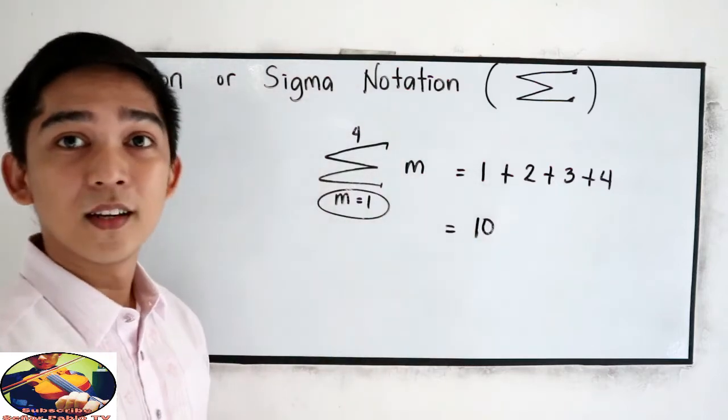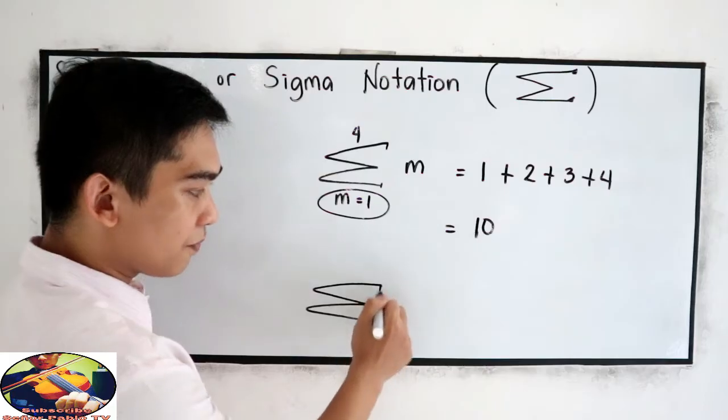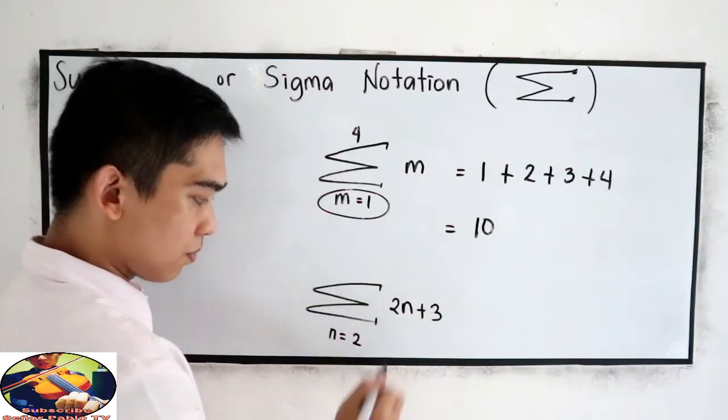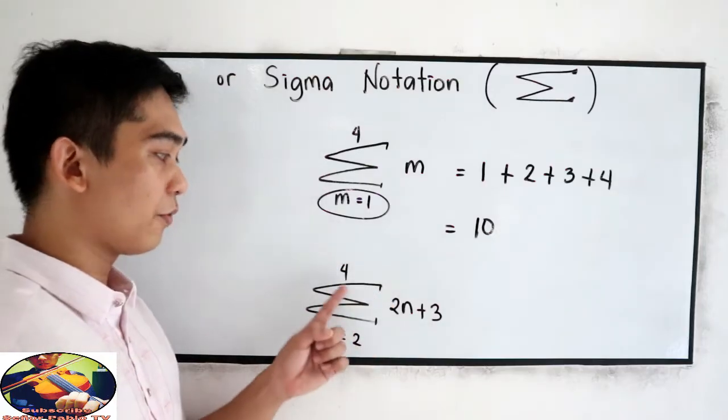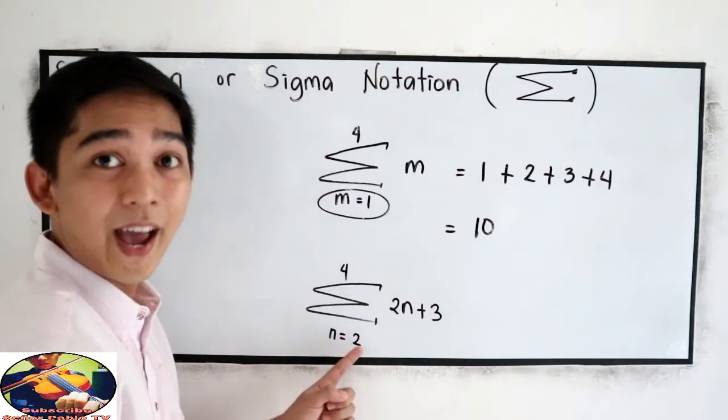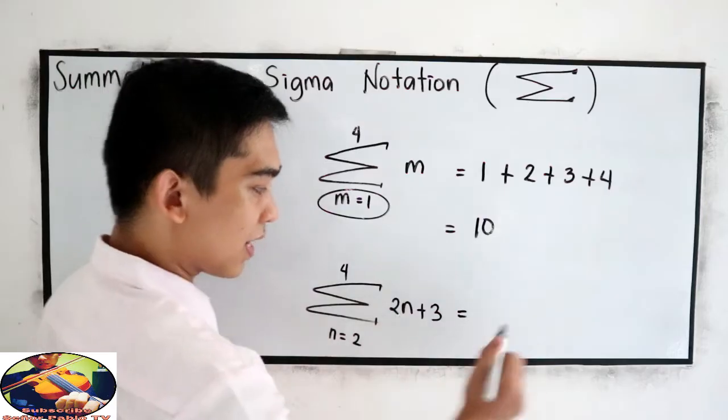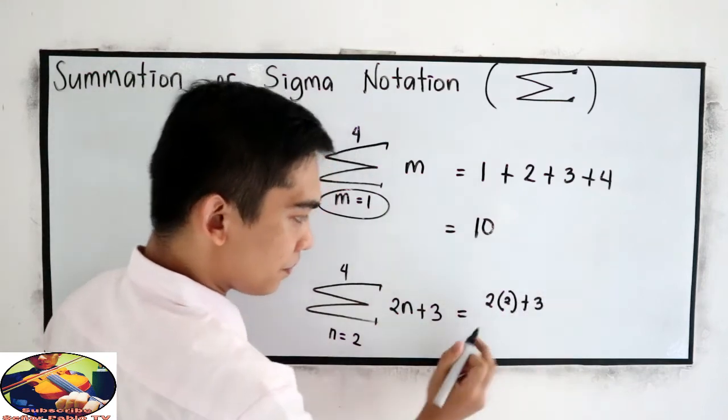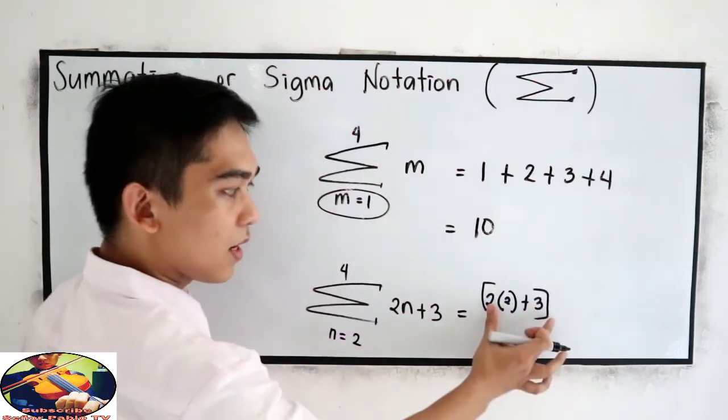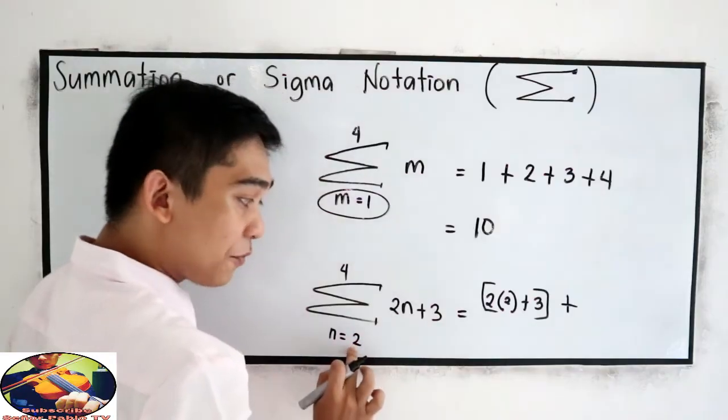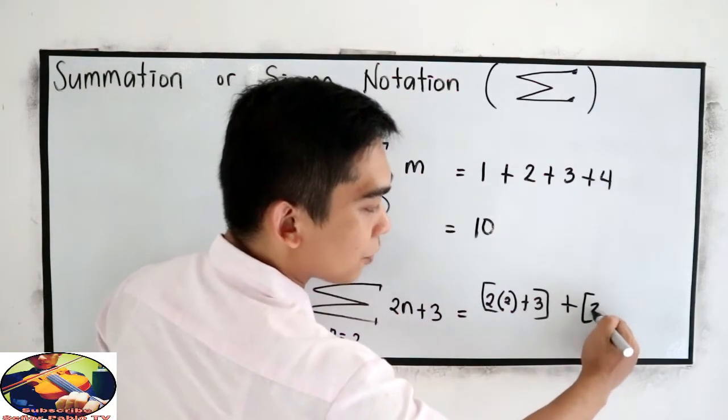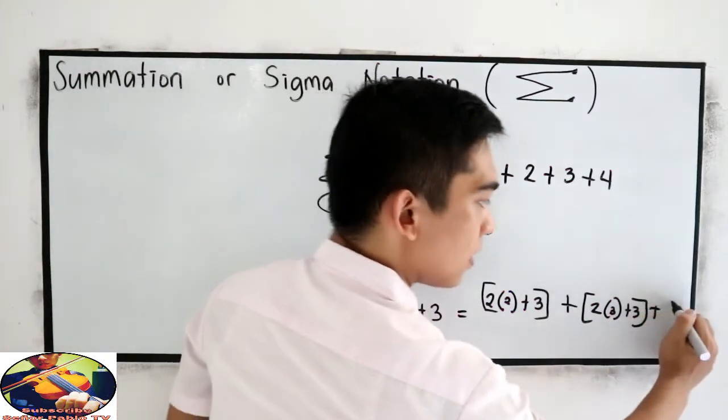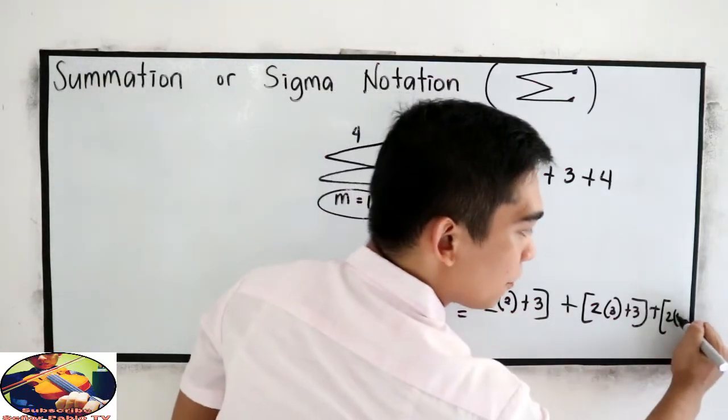Another one is summation of 2N plus 3, where N goes from 2 to 4. So we are going to start at 2 and end at 4. So we have the sum of 2 times 2 plus 3, plus 2 times 3 plus 3, plus 2 times our ending number 4 plus 3.